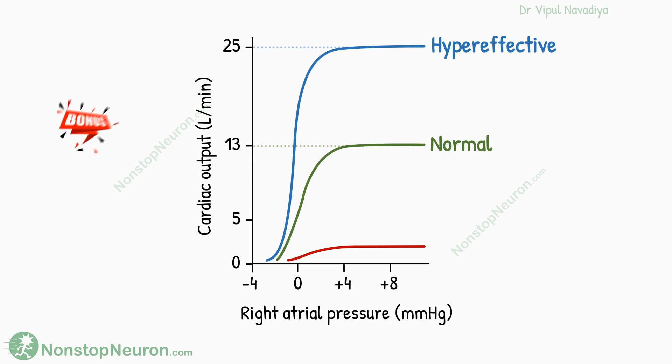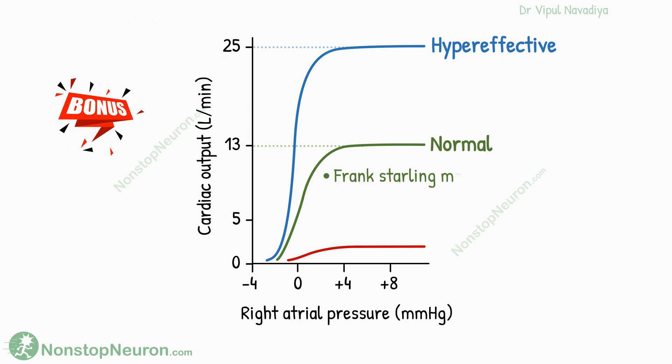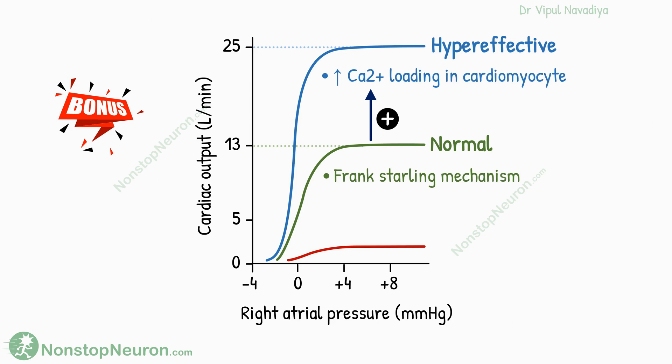Here is a bonus point. For a normal heart, mechanisms like the Frank-Starling mechanism of the heart play a major role in increasing cardiac output. But with sympathetic stimulation, mechanisms like calcium loading in myocardiocytes are also added, so this allows an even greater increase in cardiac output.